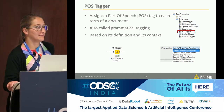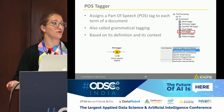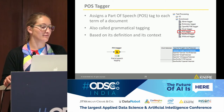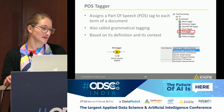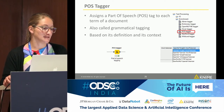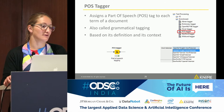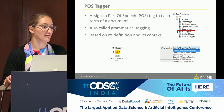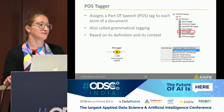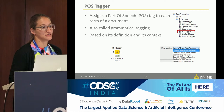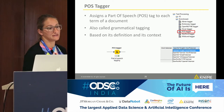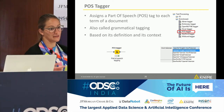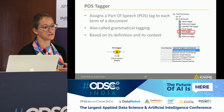Regarding word embeddings: KNIME has two deep learning integrations — the Keras integration and the DL4J integration. In DL4J we have word2vec, and with the Keras integration you can also read in word embeddings from Google's GloVe and use those as well.